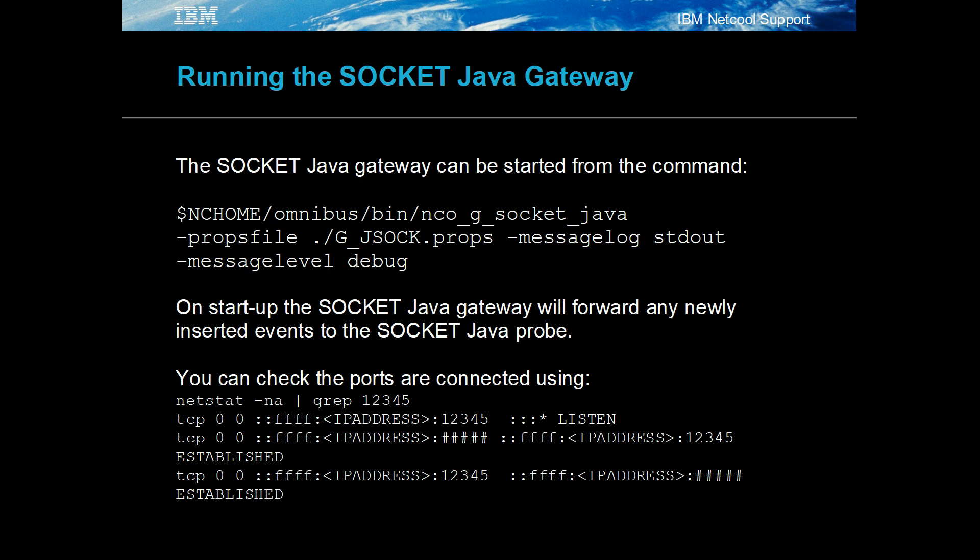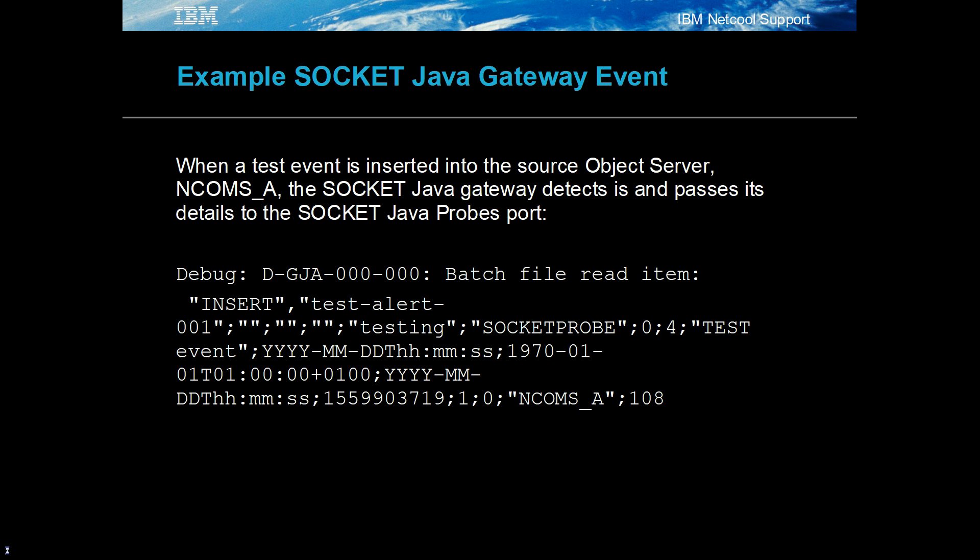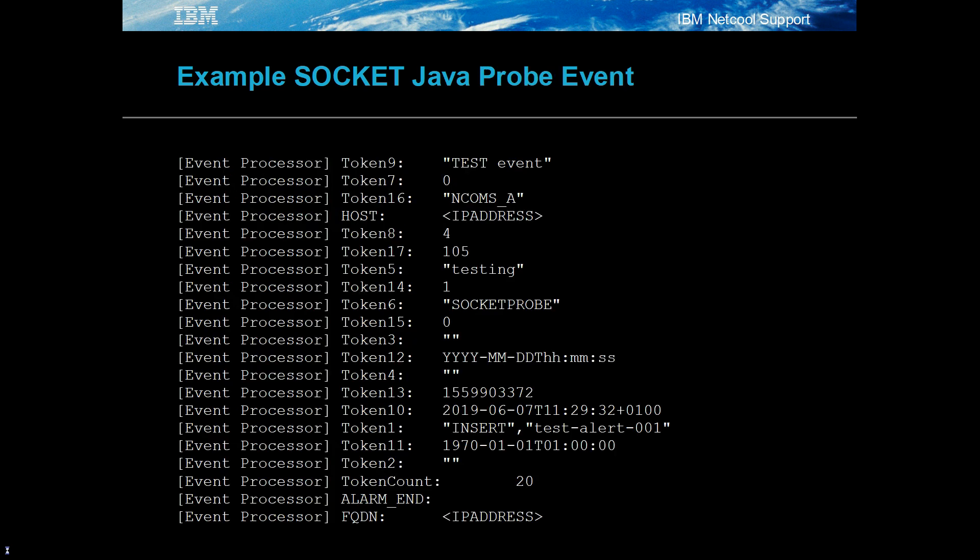As with the probe, the gateway should be run from the command line at message level debug when testing. On startup, the gateway will forward any newly inserted events where pole is zero. When checking for the gateway's connection, the probe's port should list the gateway's connection as established. When a test event is inserted into ncoms_A, the gateway's log will list the event in the batch file log. The probe should read this event and log out the event's tokens.